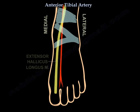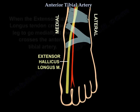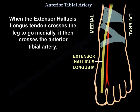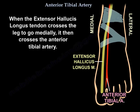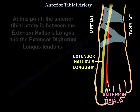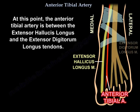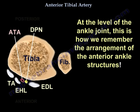When the extensor hallucis longus crosses to go medially, it crosses the anterior tibial artery. At that point, the artery is between the extensor hallucis and the extensor digitorum. This is how we remember the arrangement of the anterior ankle structures in front of the ankle.